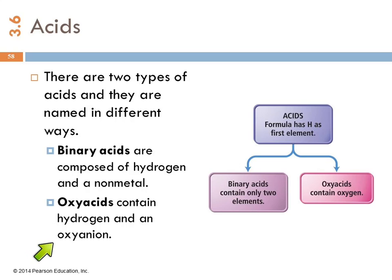Oxy acids have hydrogen, like all acids do, and then they have an oxyanion. So if you take an oxyanion—phosphate, sulfate, nitrite, something like that—and you put hydrogen on it, you get an oxy acid.